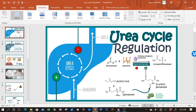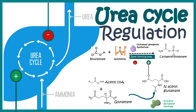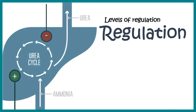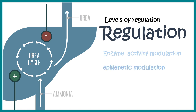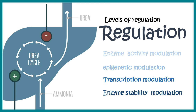In this video we'll talk about urea cycle regulation. If we talk about regulation of any metabolic pathway, the regulation can occur at several levels and timescales. For example, there could be regulation by modulating enzyme activity, epigenetic modulation, transcriptional level modulation, and also modulation of protein stability — how long the protein stays in an active conformation.